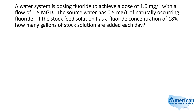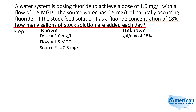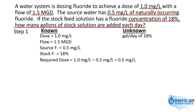Without the pictures, here's how the problem looks. Dose goal: one milligram per liter. Flow: 1.5 MGD. Source water has 0.5 milligrams per liter of naturally occurring fluoride. Stock solution is 18% fluoride. We need gallons per day of that 18% fluoride solution. Don't miss this: since source water fluoride is 0.5 mg/L, we only need to add another 0.5 mg/L to achieve our goal. Required dose equals goal minus what we already have: 1.0 − 0.5 = 0.5 mg/L.